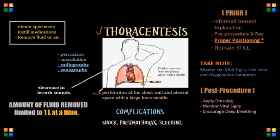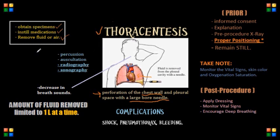Thoracentesis is a surgical procedure. What happens is there's a surgical perforation of the chest wall and within the pleural space with what we call a large bore needle. Why is it performed? It's used to obtain specimens for diagnostic evaluations. It can also be used to instill medications — a lot of people don't know that. You can instill medication straight into the pleural space. And obviously, one of the main reasons would be to remove fluid, which is effusion, or air from the pleural space to help alleviate therapeutic relief for a patient from the pleural pressure.